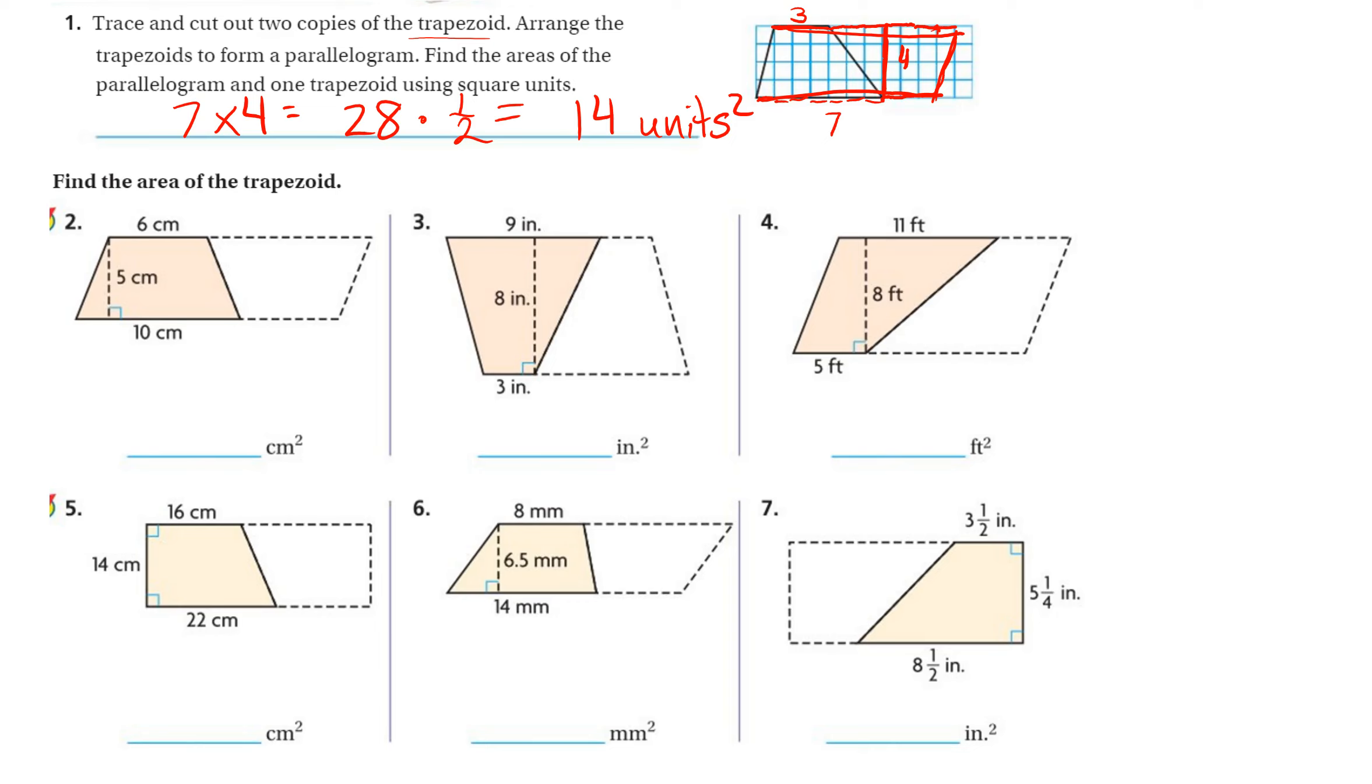So again, number two. From here to here is 10, and then from here to here would be the length of the other base, which is six. And our height is five.